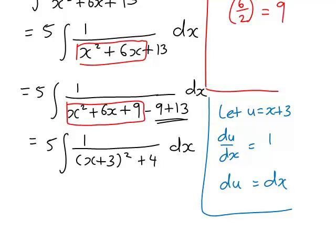We could therefore rewrite our expression as 5 multiplied by the integral of 1 divided by u² plus 4, and dx is replaced with du.